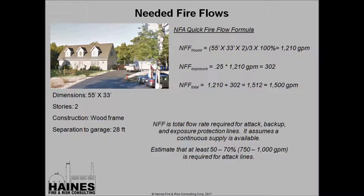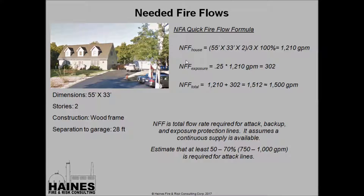Once we've calculated the NFF for the house, we calculate the NFF per exposure. Each exposure gets 25% of the main building's NFF, so in this case it's 302 GPM per exposure. We have one exposure — the garage — so we have 1,210 plus 302 GPM, bringing us to about 1,500 GPM as our needed fire flow. It's important to keep in mind that the NFF includes the attack line, backup line, and exposure protection lines, and assumes continuous supply. Your attack lines are typically about 50 to 70% of your NFF when using this formula.